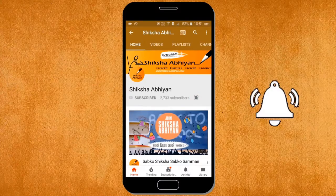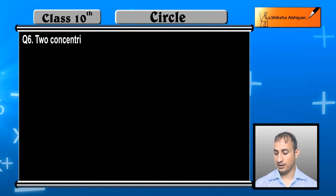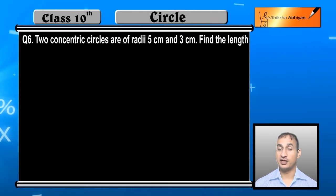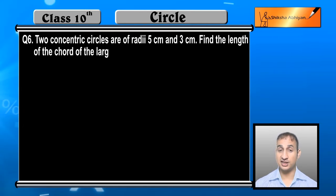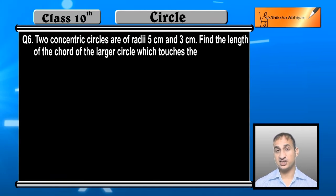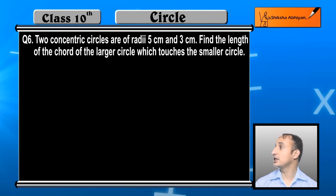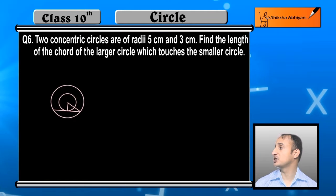See the next problem: two concentric circles are of radii 5 centimeter and 3 centimeter. Find the length of the chord of the larger circle which touches the smaller circle. Two concentric circles are already in the figure. You can see the larger circle touches the smaller circle.